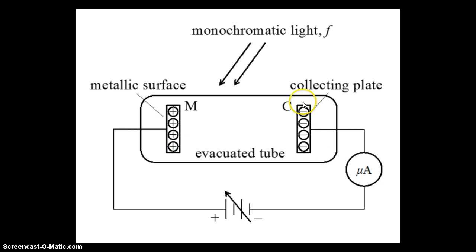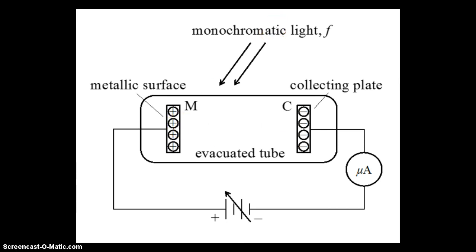Here's what that looks like. The collecting plate is now connected to the negative terminal, which means it has a net negative charge. The metal plate is connected to the positive terminal, so it has a net positive charge. You might be wondering how an electron, which is negative, can be ejected from this positively charged surface. Even though the metal surface has a net positive charge, there are still electrons in the surface — they're just outnumbered by positive charges — and those electrons will get ejected when they absorb a photon with enough energy.